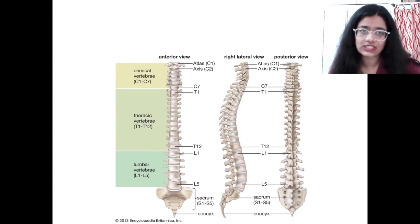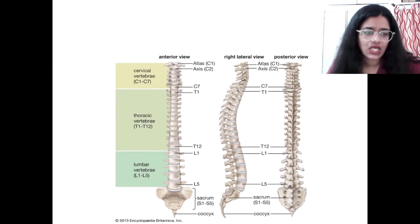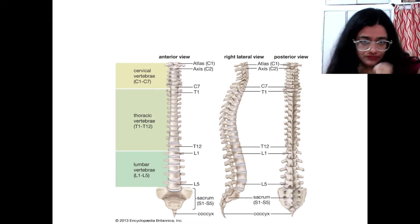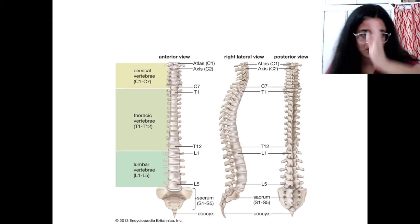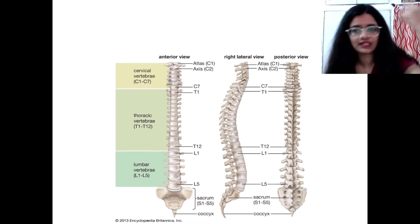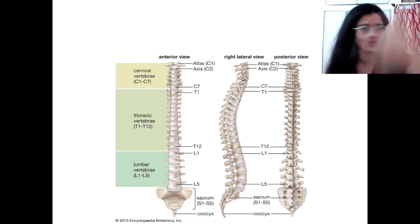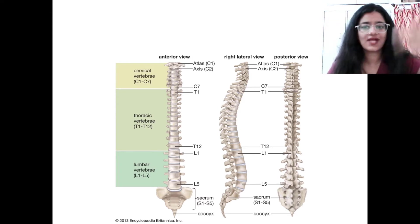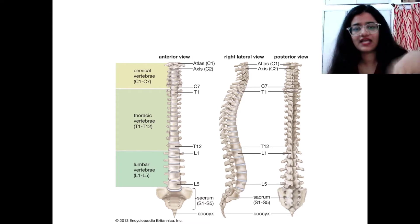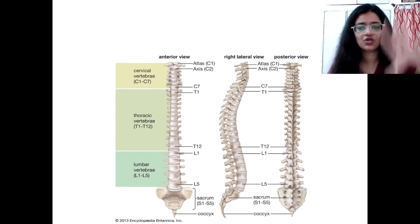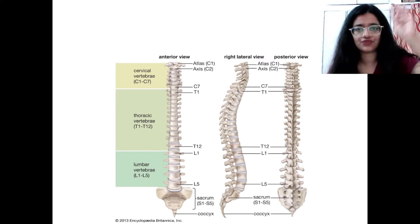The vertebral column regions are: cervical 7, thoracic 12, lumbar 5, sacrum 5 fused, and coccyx 4 fused, giving a total of 26 bones.